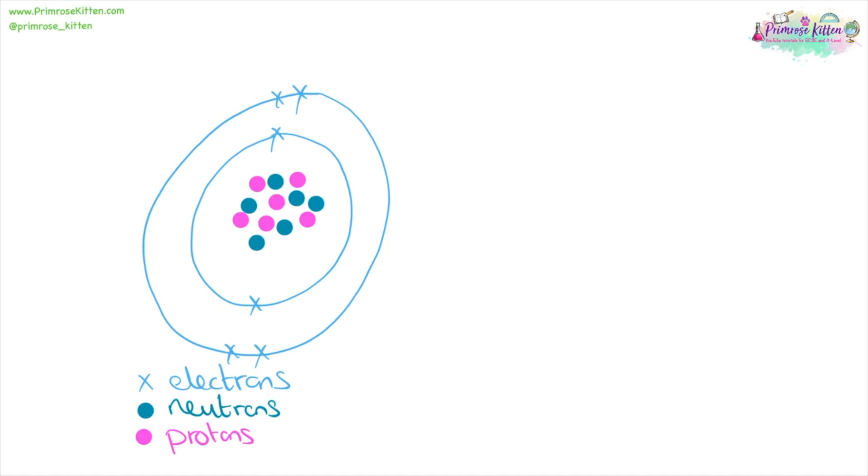We have electrons that are on the shells around the outside, protons that are in the middle, and neutrons that are in the middle. And this bit in the middle here is collectively called the nucleus.